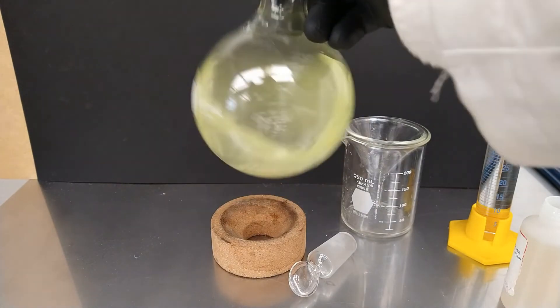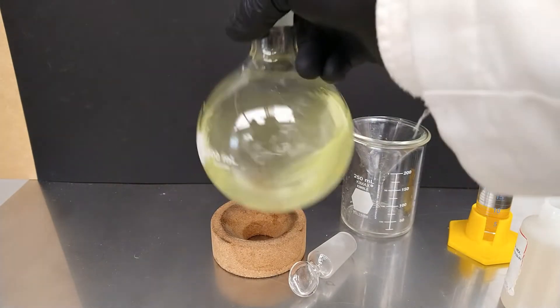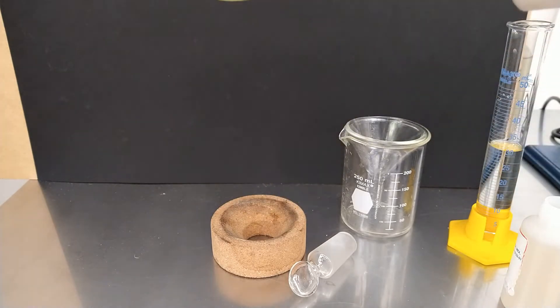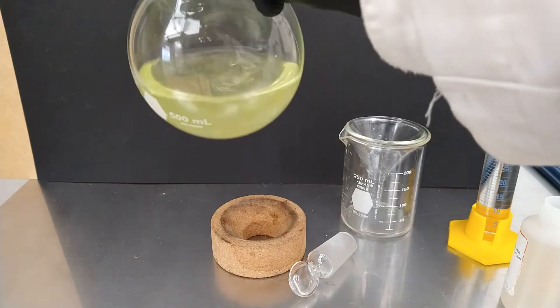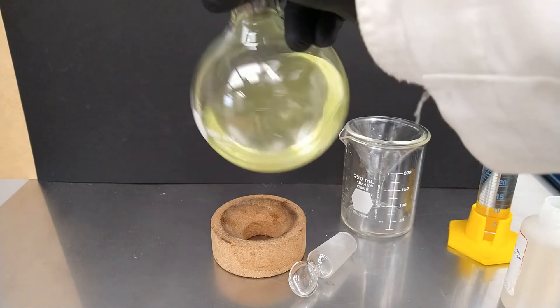Then we swirl the flask a couple times to try to dissolve all the sodium tungstate. We can see the yellow formation of tungstic acid.